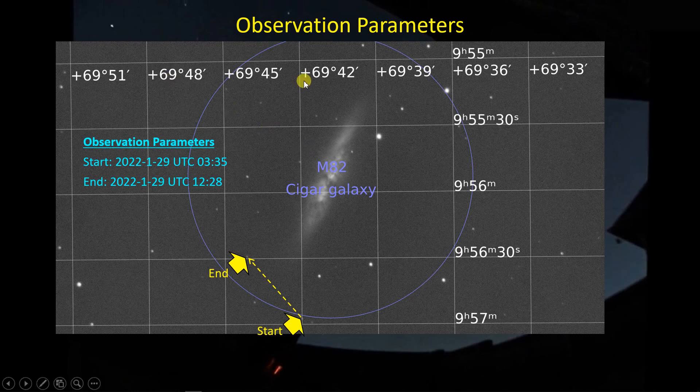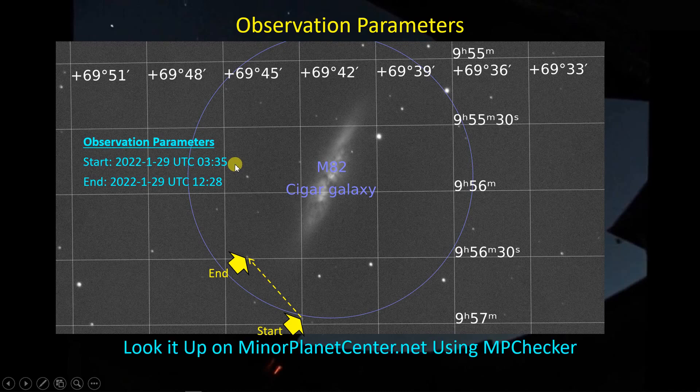I picked it up about right here, which conveniently is near the intersection of an RA grid at 9 hours and 57 minutes and a DEC grid of 69 degrees and 42 minutes. That information combined with this time information is what we'll use to go into the minorplanetcenter.net website and in particular use their tool MP Checker. If you just want to find this website, it's probably better just to do a Google search for MP Checker — it'll take you right to it. So let's go over to that website and type in this information.